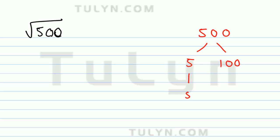The 5 can come down. Notice that 100 is equal to 10 times 10. We can keep breaking 10 down, but note that 500 is equal to 10 squared times 5. And so if we put the 10 squared under the radical, that will cancel out. Now that we've found our perfect square, we can just plug it in.